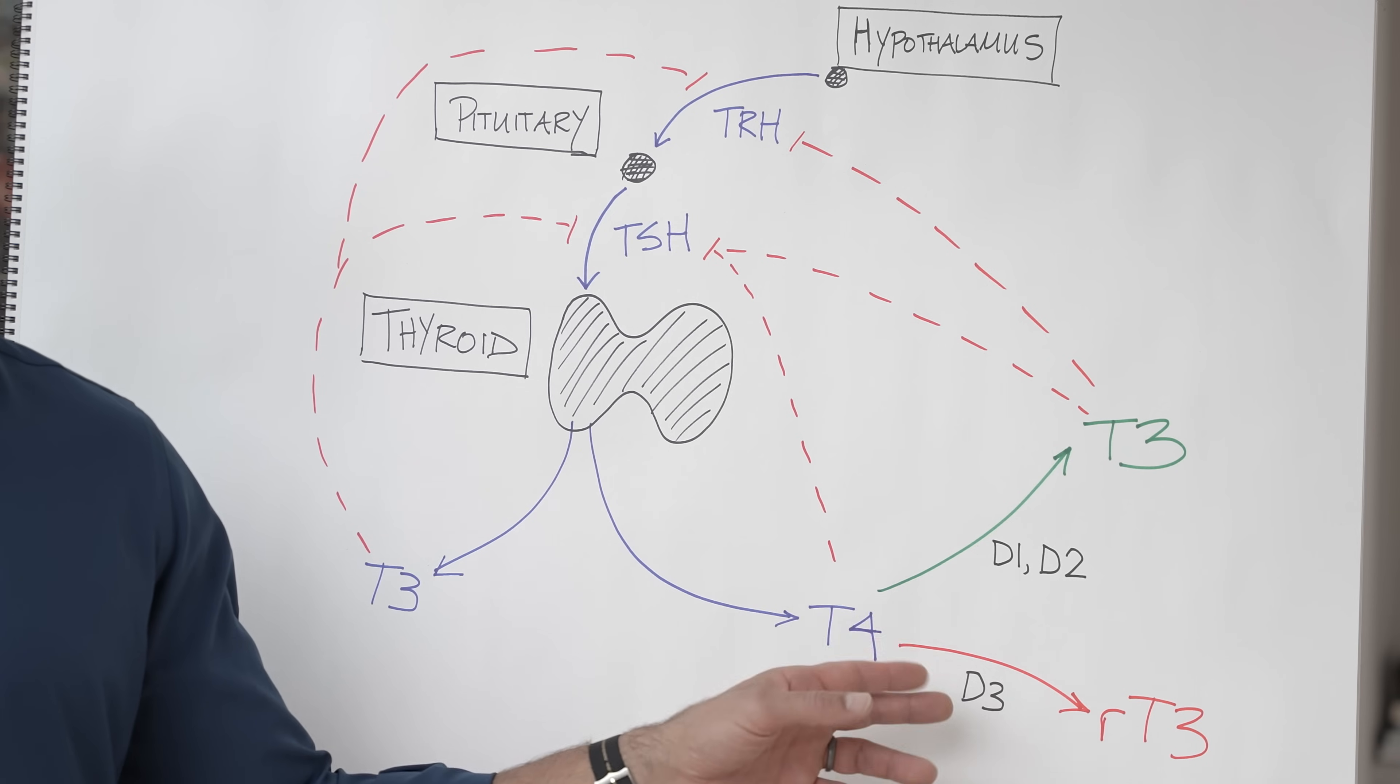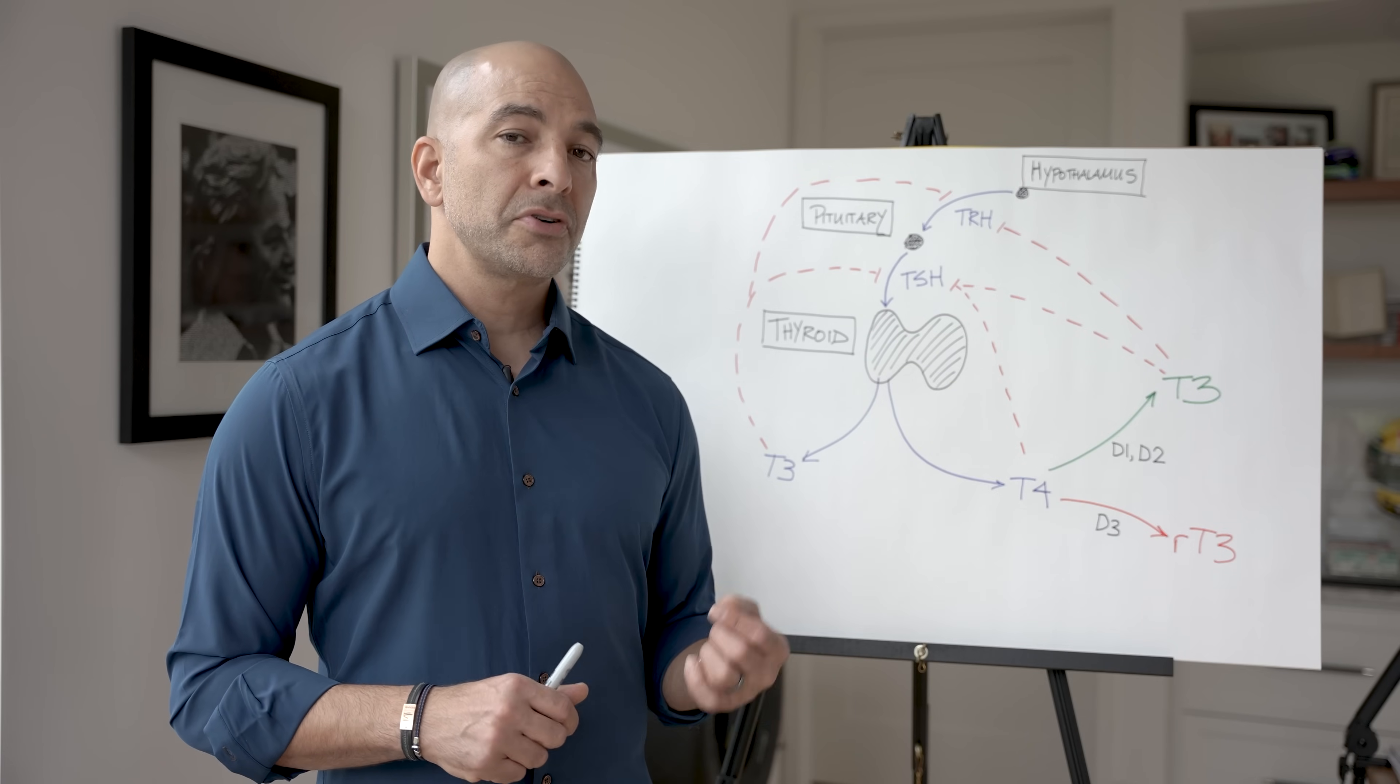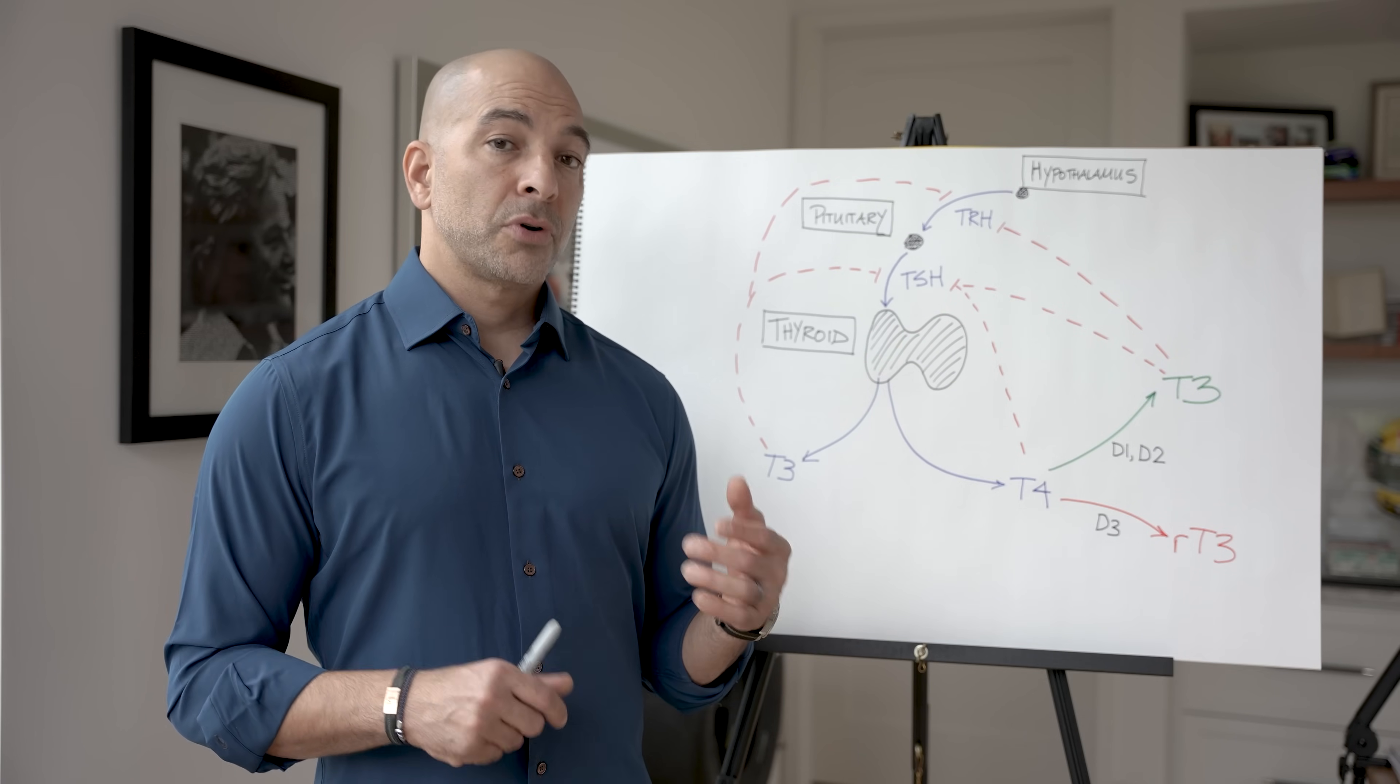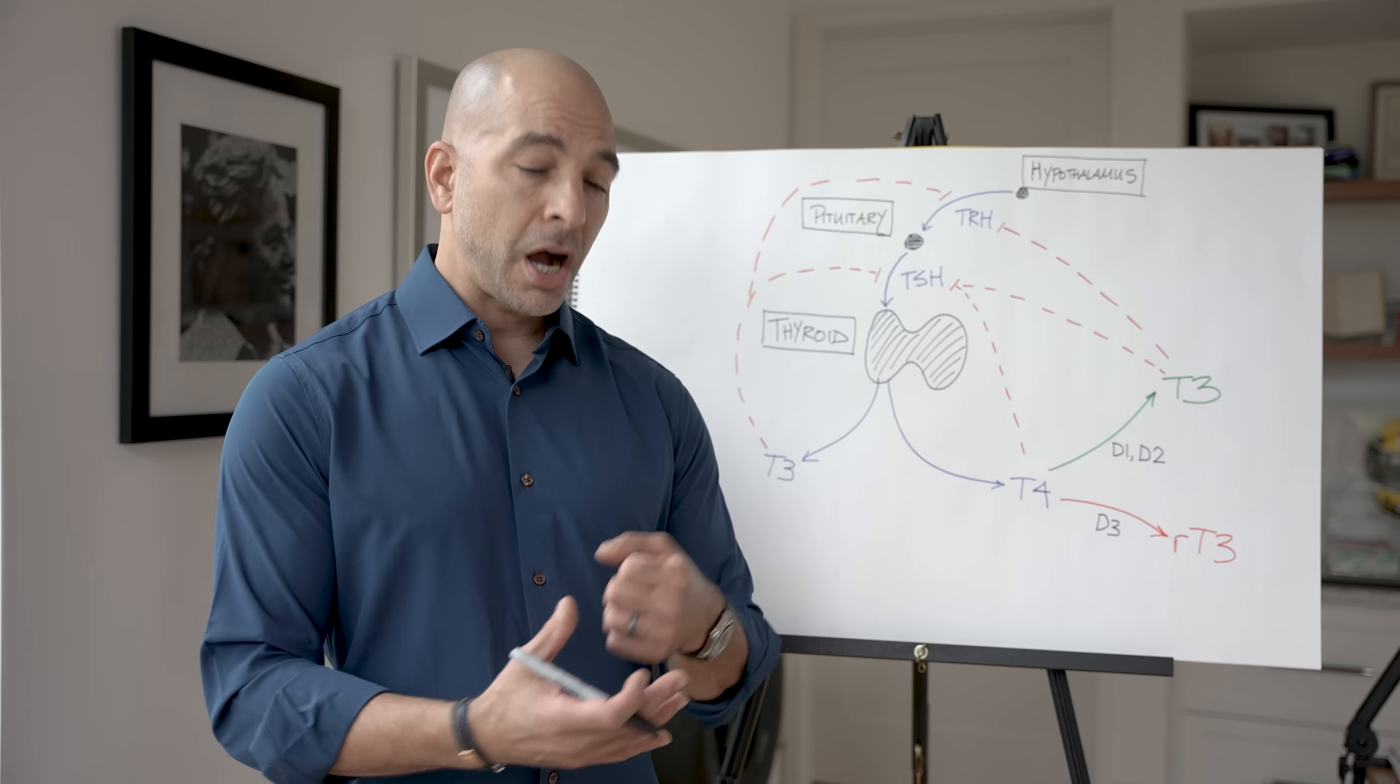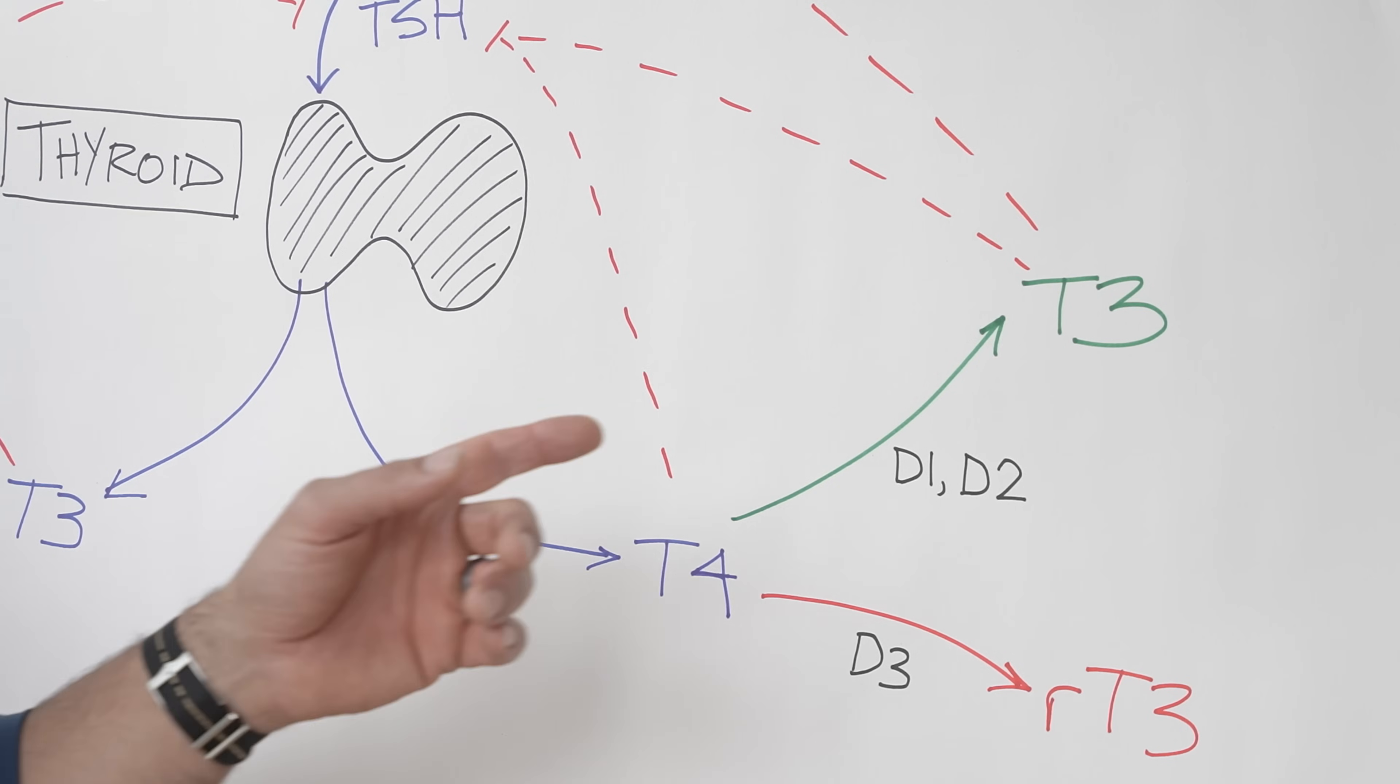Now, D3 is different in that D3 takes T4 and makes something called reverse T3. Reverse T3 is very similar to T3, except for a very important difference, which is it doesn't activate the receptor that T3 activates. So it occupies the receptor without activating it. In effect, you can think of reverse T3 as anti-T3. It basically blocks the effects of T3.